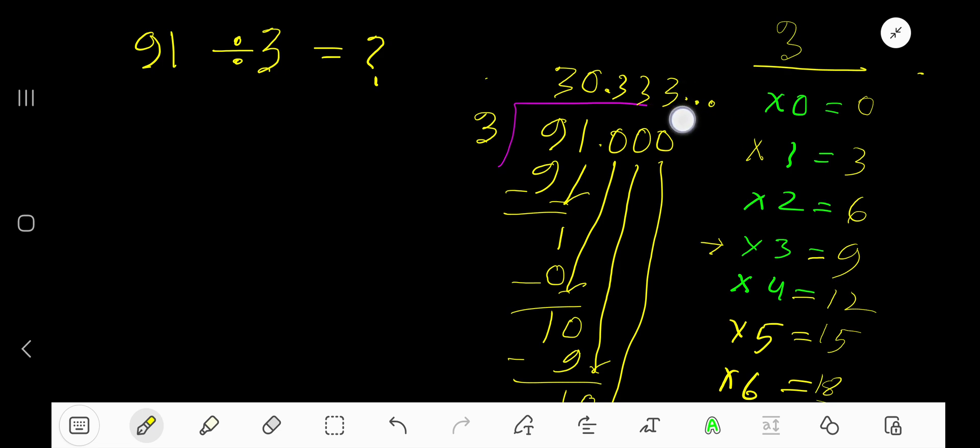To mean that this process is continuing. Since 3 is repeating, we can also write like this: 30.3 bar. Bar means 3 is repeating.